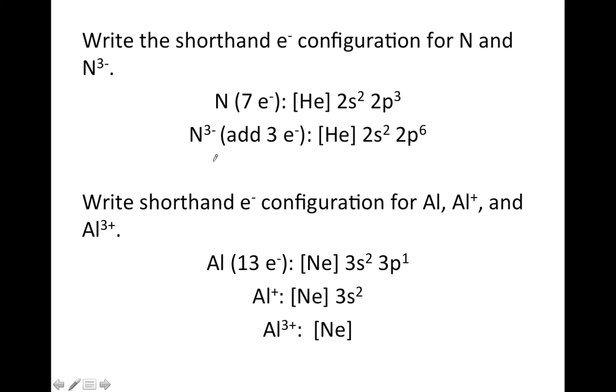Let's do a couple of examples. Write the shorthand electron configuration for N and N³⁻. So N has seven electrons, so here's the shorthand electron configuration for N.